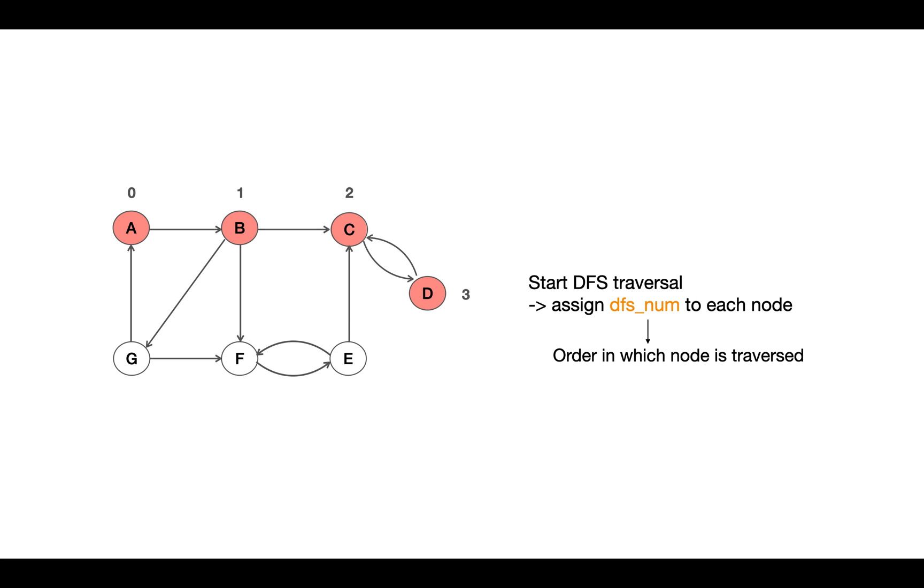And go to next child node, let's say F, assign 4, then E assign 5 to it. At last we go to third child node of B, that is G, and assign 6 and it's done.